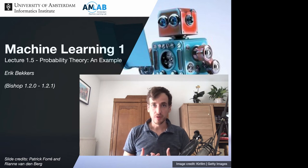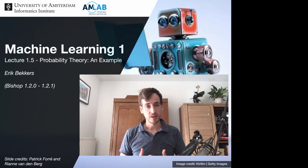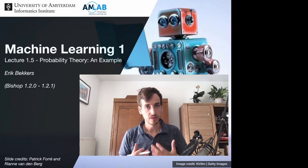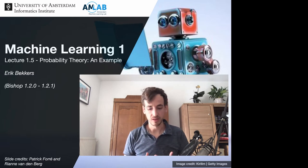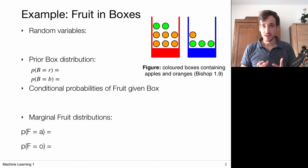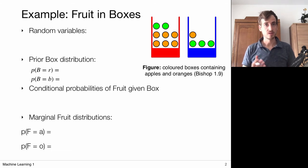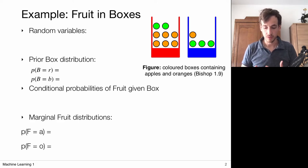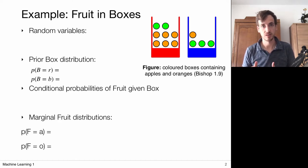Now that we've covered some core definitions in probability theory, let's go over some examples to gain some intuition. In this example we are going to consider the process of picking fruits from boxes. These boxes have colors, and so one time we pick an orange, one time we pick an apple — sometimes it's from the red box, sometimes it's from the blue box.